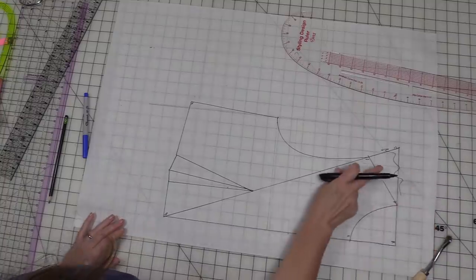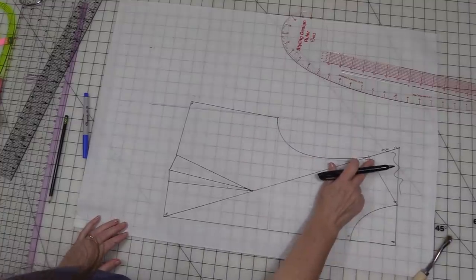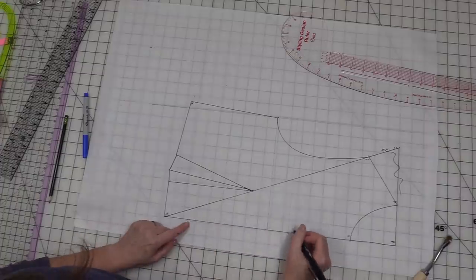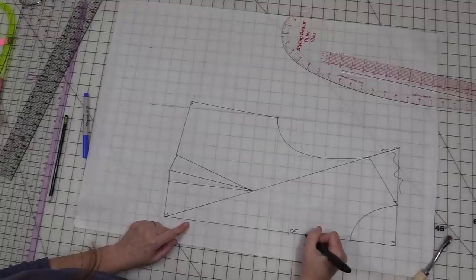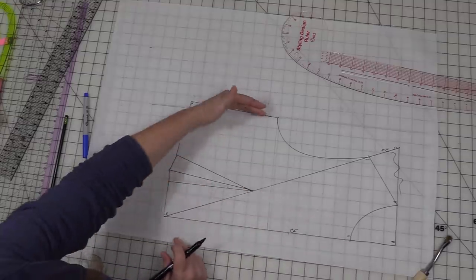This is no more. At this point we now have our armhole, our neck hole, our shoulder seam, our center front. Let's go ahead and mark this. CF is center front. We've got our dart and then we have our side seam.